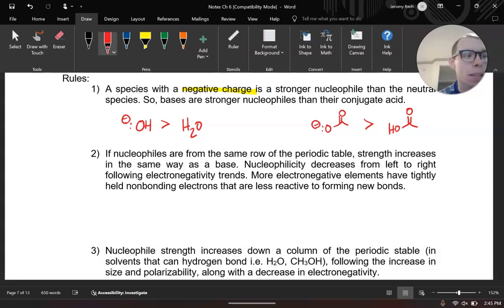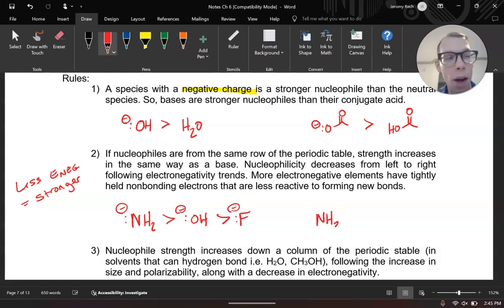So if we were considering maybe some nitrogen versus oxygen versus fluorine, NH2 with a negative charge is going to be better than an oxygen with a negative charge, which is better than a fluorine with a negative charge. So the key idea here is your less electronegative is going to give you stronger values. Same thing if you're comparing, instead of having negative charges, if you had maybe ammonia, NH3 versus water, the nitrogen is going to be better than the oxygen. You could do the same thing if you're comparing maybe a phosphorus and a sulfur, phosphorus is going to be better, so on and so forth.